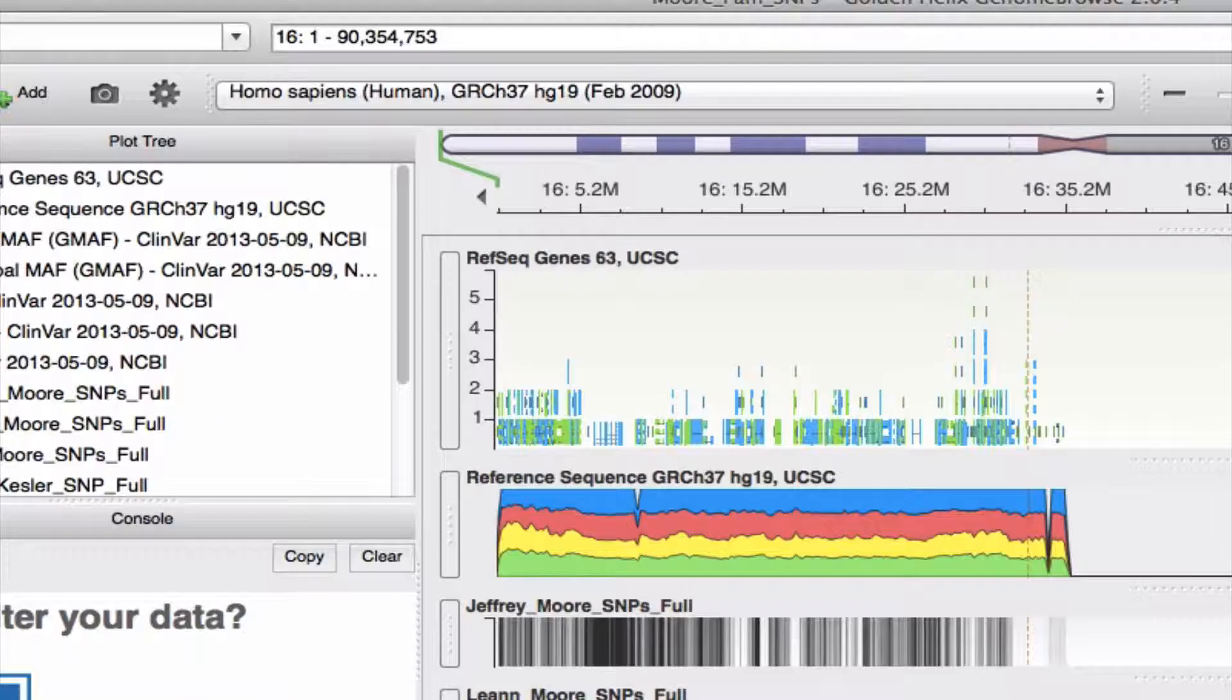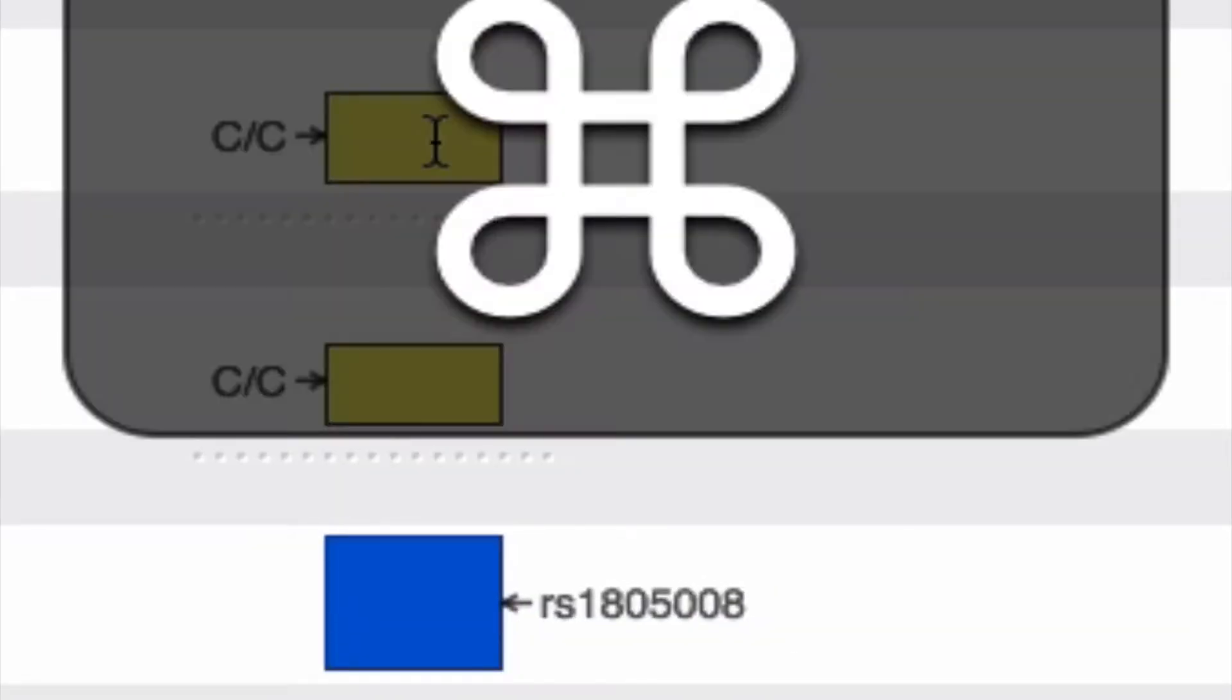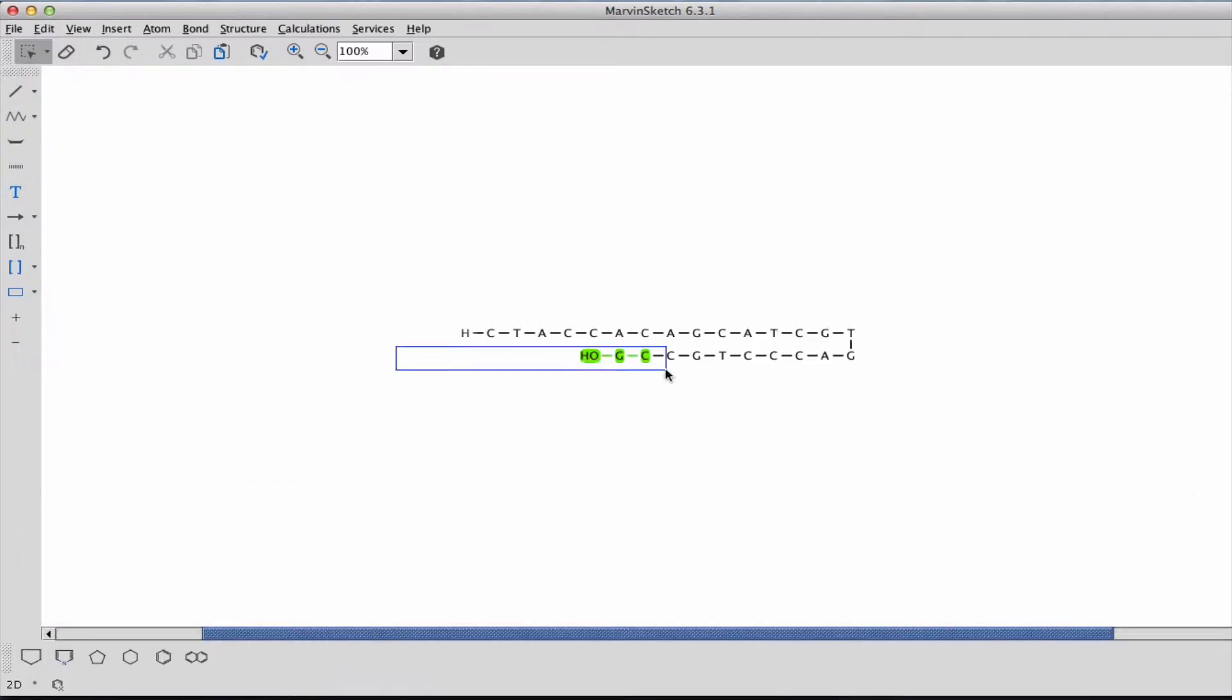So, for example, there it is in my genome browse. Let's go back and copy that sequence and paste it into Marvin's sketch. Get it all situated in a way that looks nice.